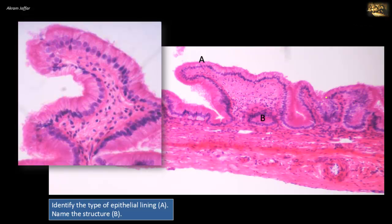Identify the type of epithelial lining, A. Name the structure, B. In the wall of this structure, we can notice three layers: mucosa, muscularis, and adventitia. So it doesn't look like it has the classical features of the gut tube — it lacks a muscularis mucosa and submucosa. In addition, the smooth muscle fibers in the muscularis layer are arranged in multiple directions: longitudinal, transverse, and oblique.